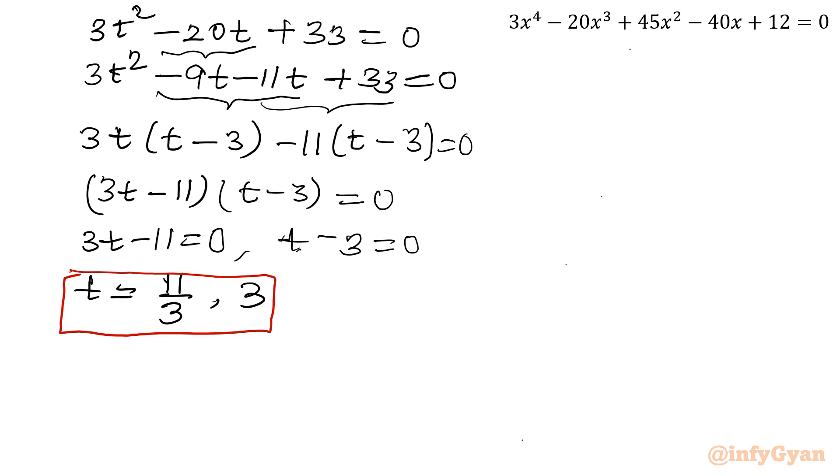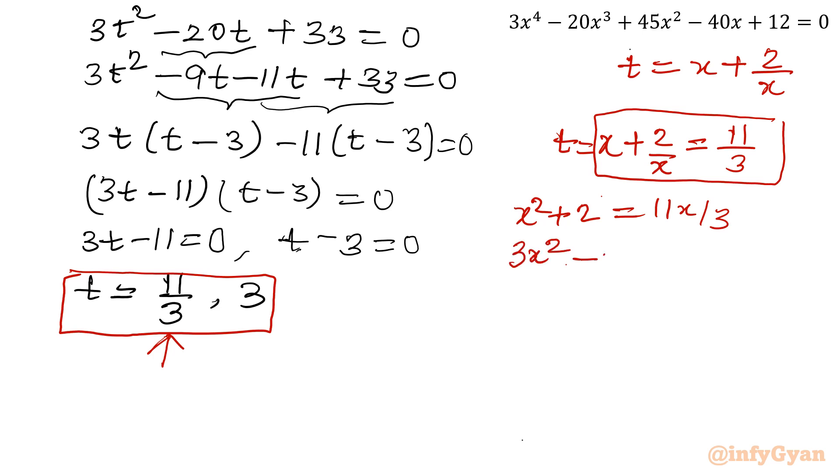So what was the value of t? t was x plus 2 over x. So now we have to solve two equations because this is the value of t. Let me write here. t equal to x plus 2 over x equal to 11 over 3. Multiply both sides by x. So now we are going to solve this quadratic equation. So x square plus 2 equal to 11x over 3. Multiply both sides by 3. 3x square minus 11x plus 6 equal to 0.